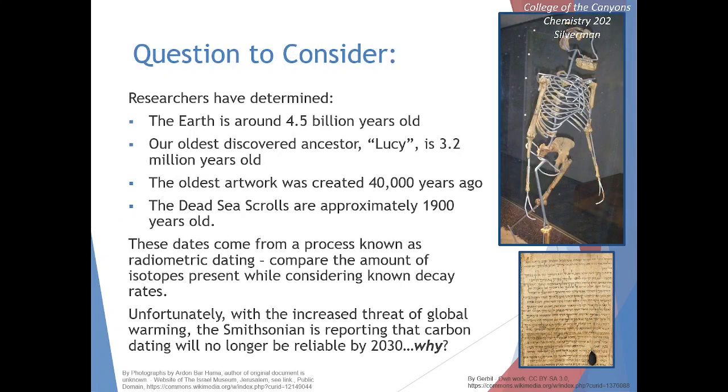We can start with some motivation and a little history. We know that the Earth is around 4.5 billion years old. Our oldest discovered ancestor, Lucy, is 3.2 million years old. The oldest artwork was created 40,000 years ago. The Dead Sea Scrolls are approximately 1900 years old. These dates come from a process known as radiometric dating, which compares the amount of isotopes present while considering known decay rates. We'll try to build up an understanding of how and why this process works and look at some of the limitations.